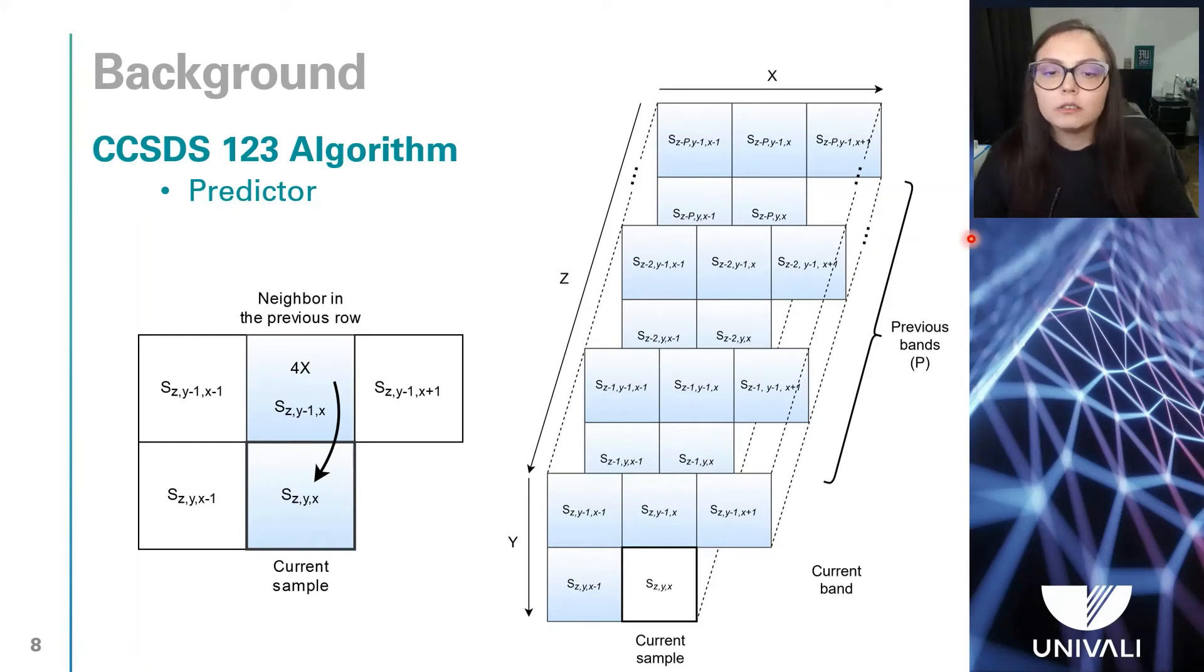Following, the weights are updated based on the scaled prediction error, which is the difference between twice the current sample and the scaled predicted sample, to modify the weights of the band that is currently being calculated and to adapt them to the image statistics.